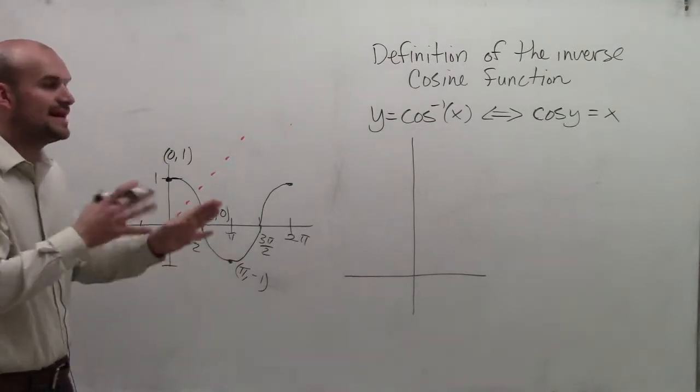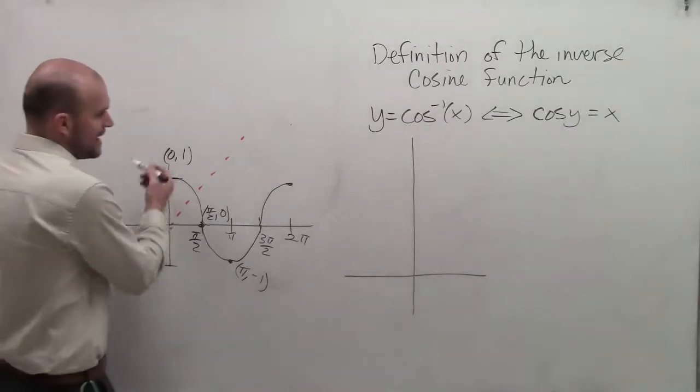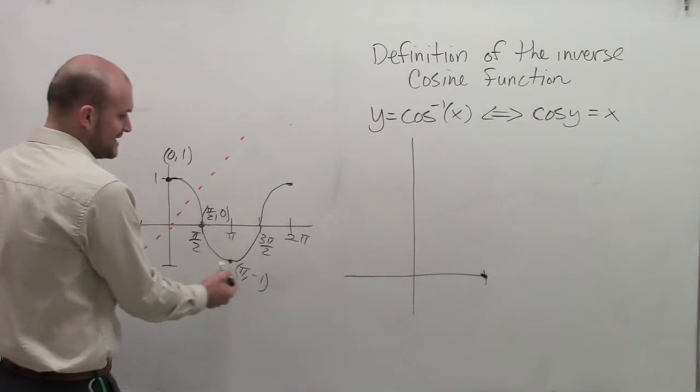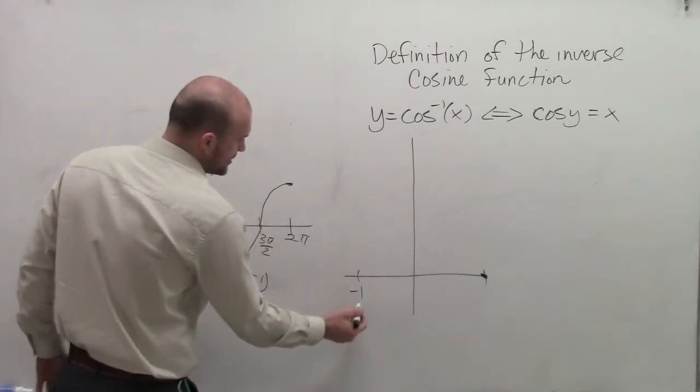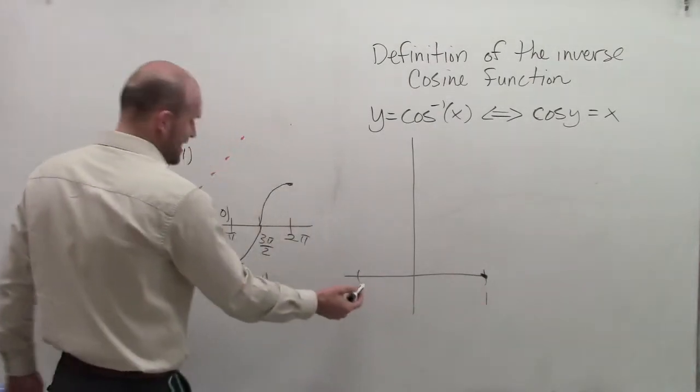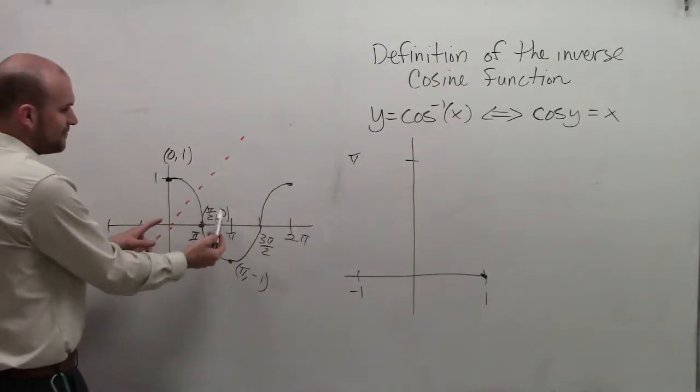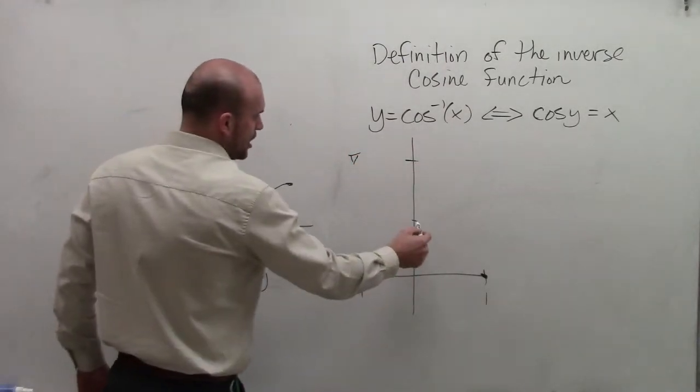If I was going to flip these new coordinates, I would now have 1 comma 0, which would be a point. I would have -1. So now I'm going to go between -1 and 1, and -1 up to π. And then I would have 0 up to π/2.